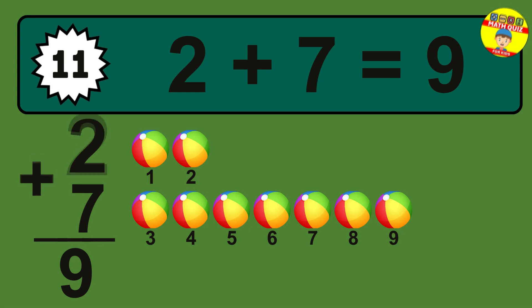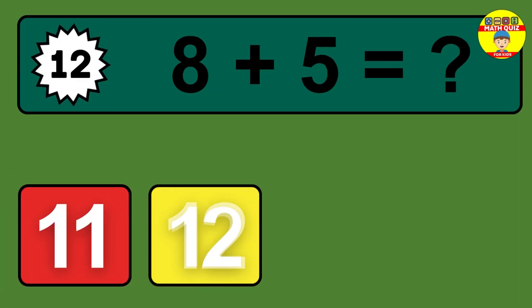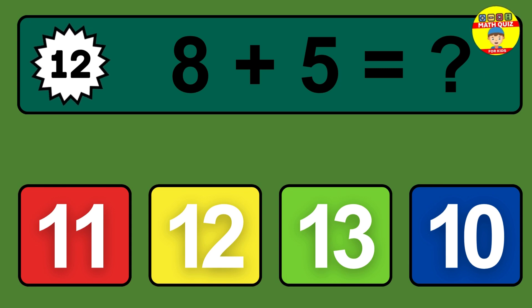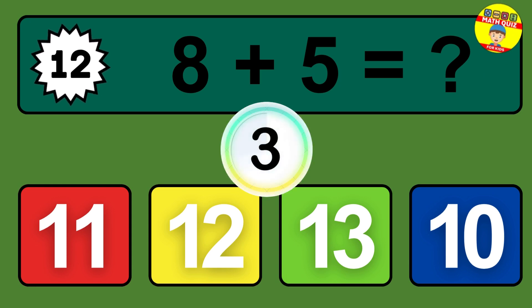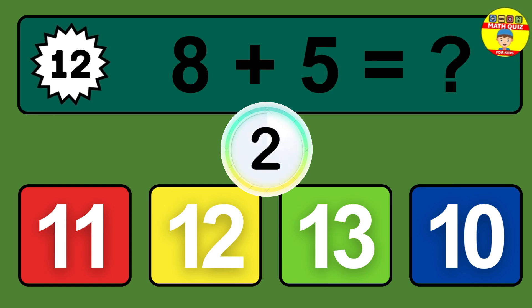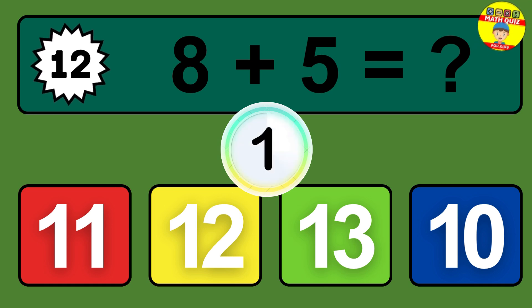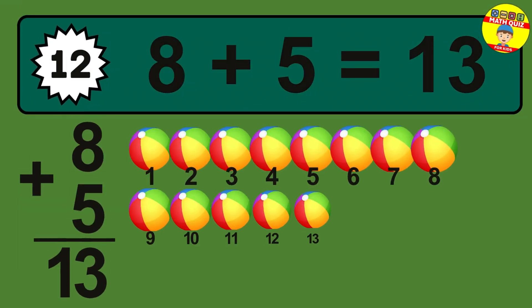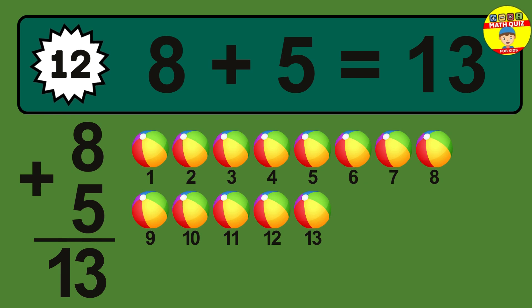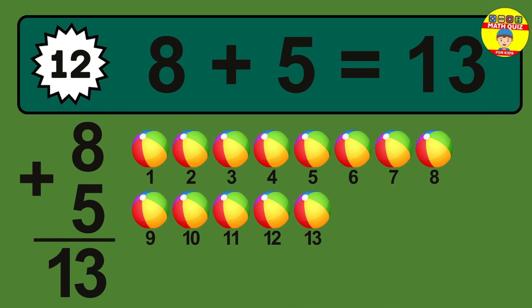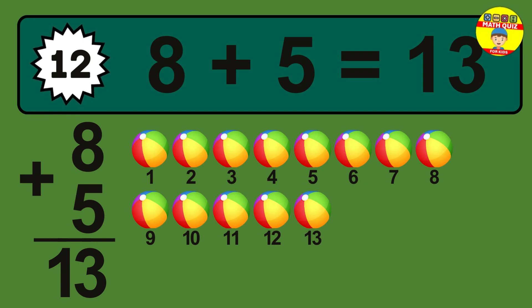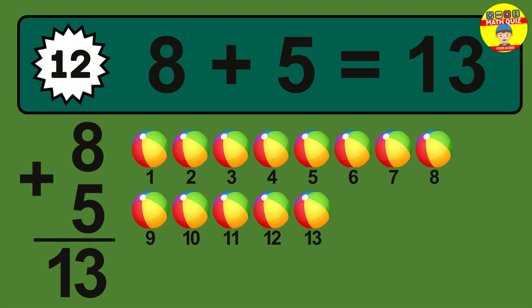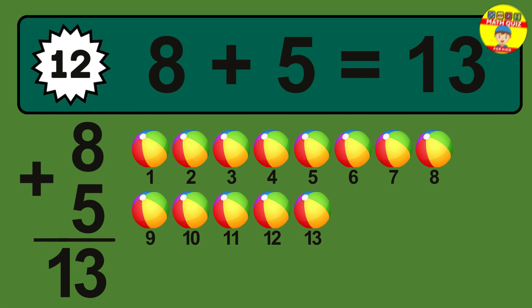Question 12. 8 plus 5 equals what? The answer is 8 plus 5 is 13. Let's count it: 1, 2, 3, 4, 5, 6, 7, 8, 9, 10, 11, 12, 13.